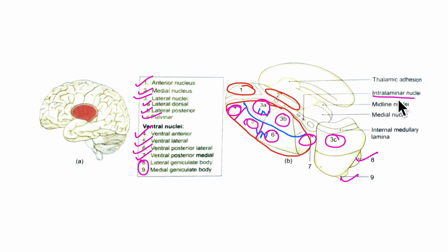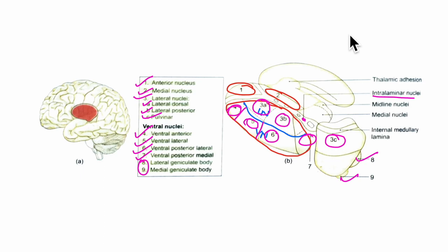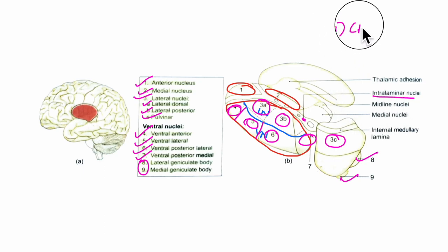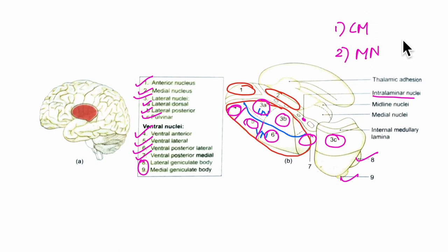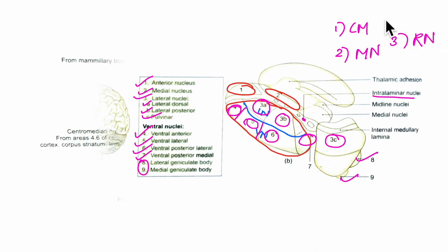Here is the intralaminar nuclei. It includes the centromedian nucleus, the midline nucleus, and the reticular nuclei. The intralaminar nuclei include the centromedian nucleus, the midline nucleus, and the reticular nuclei.